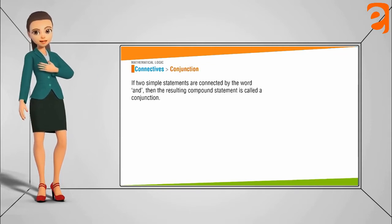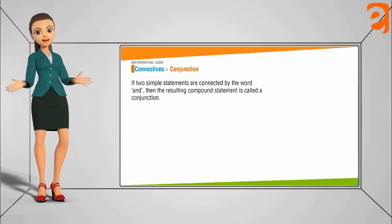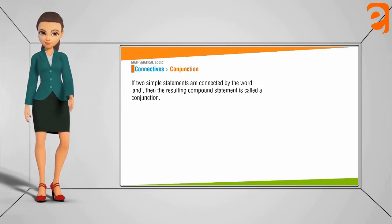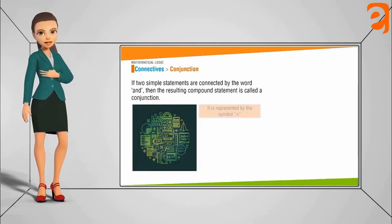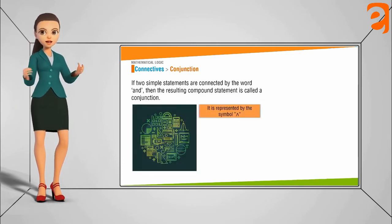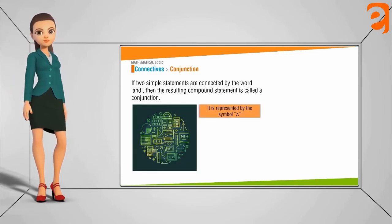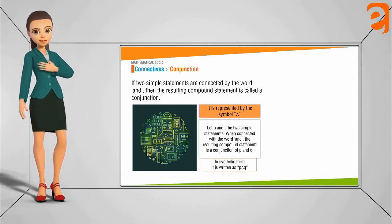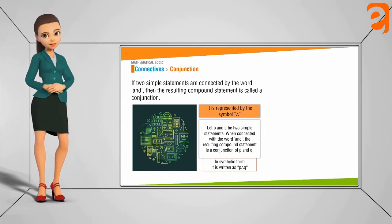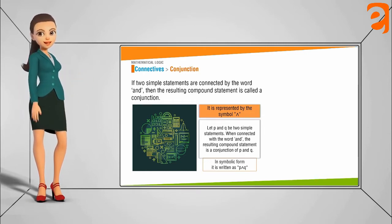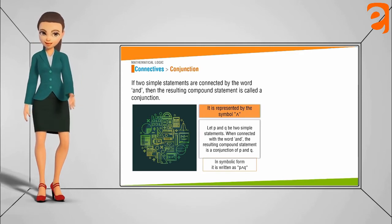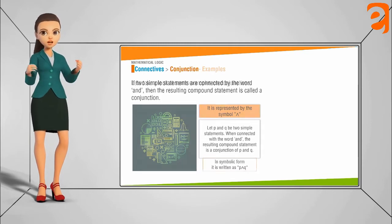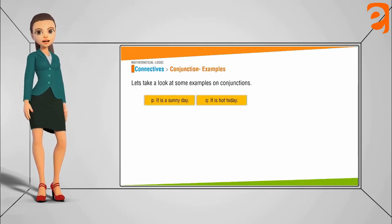So what do you mean by conjunction? If two simple statements are connected by the word 'and', then the resulting compound statement is called a conjunction. In symbolic form it is always represented by the hat symbol (∧). So if p and q are two simple statements, when connected with the word 'and' the resulting compound statement is called conjunction, written as p∧q.